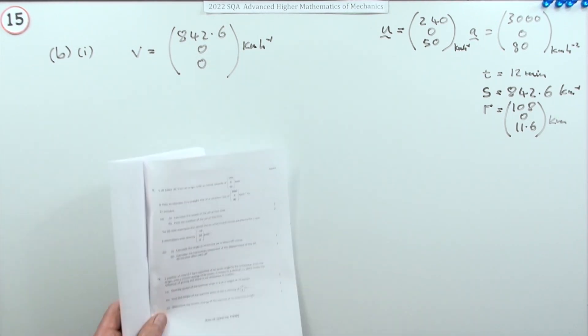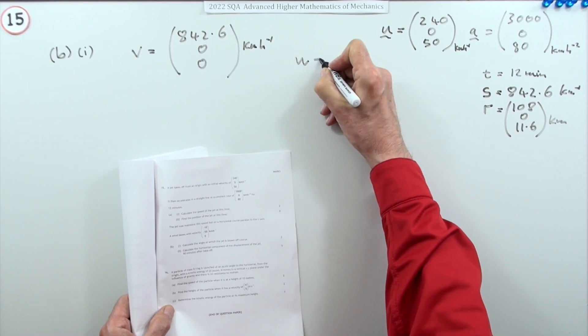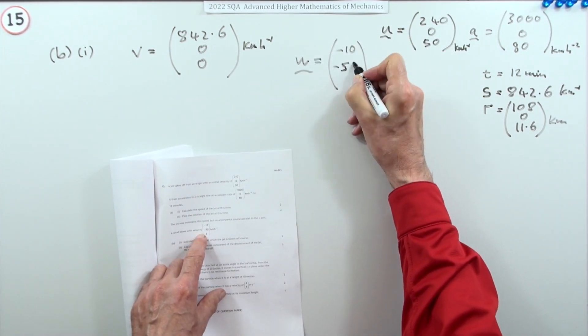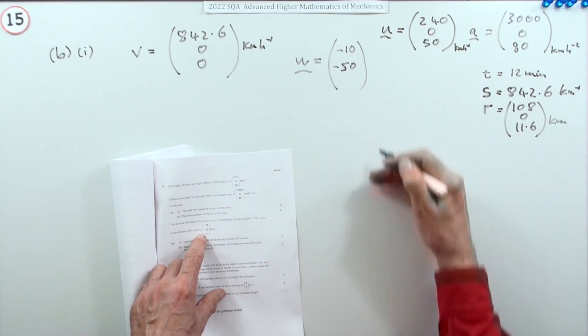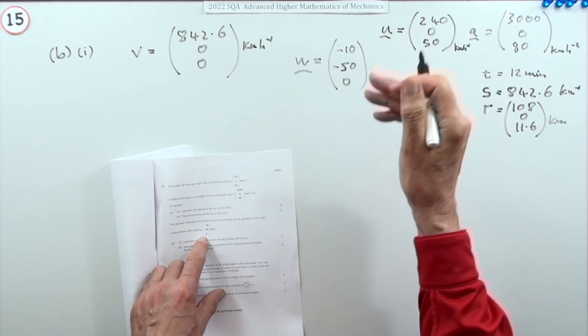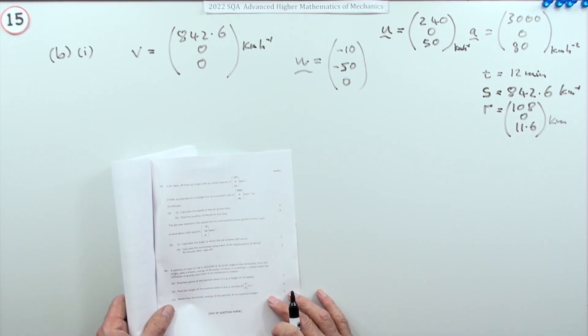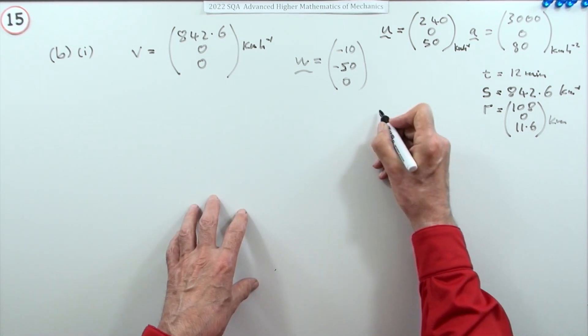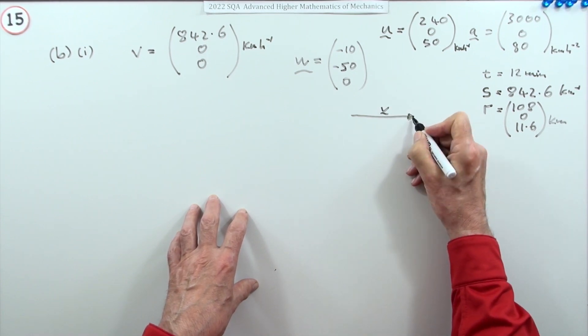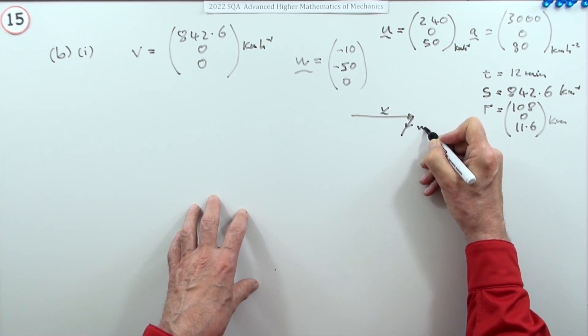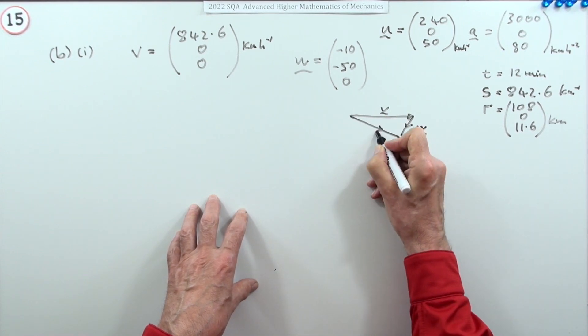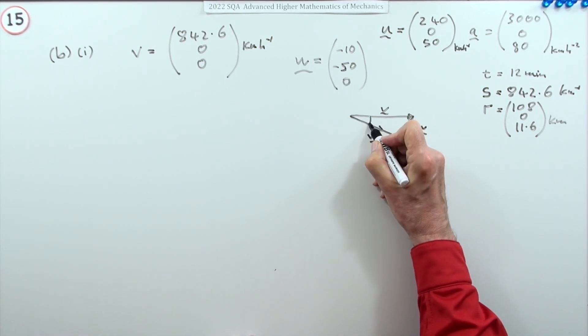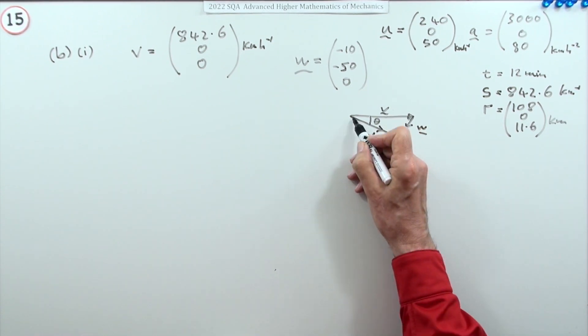Calculate the angle at which the jet's blown off course. The wind has a velocity of (-10, -50, 0), so it's blowing against it and blowing it off course horizontally, but there's no vertical wind so it maintains its height. Two marks - what's the angle? It's flying along quite happily, there's its velocity, the wind is blowing in this direction, there's the resultant velocity of the jet. This is the angle you want here.